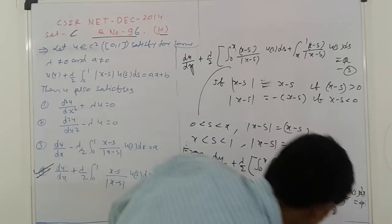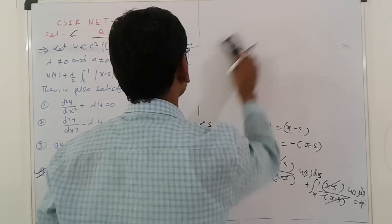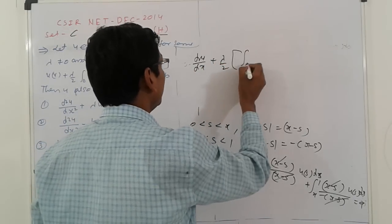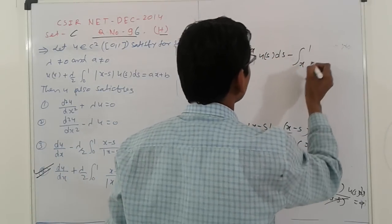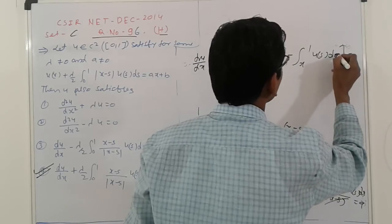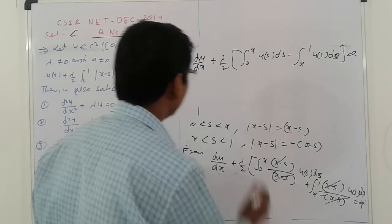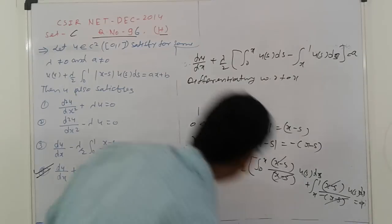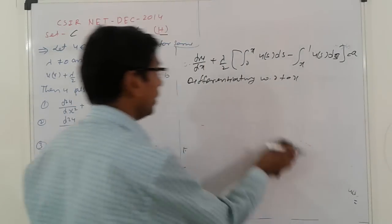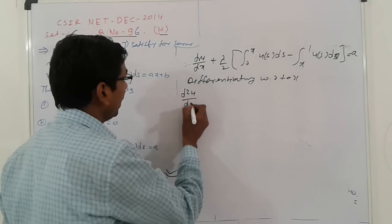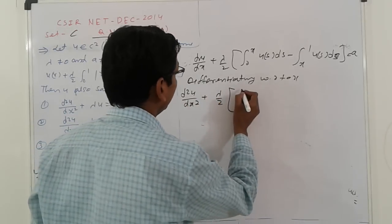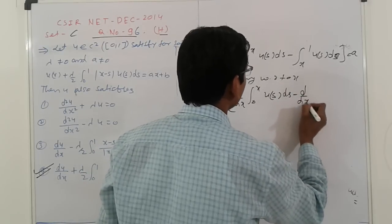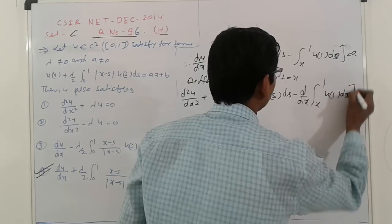Now differentiating again with respect to x and applying the Leibniz rule: d²u/dx² + λ/2 · [d/dx ∫₀ˣ u(s) ds − d/dx ∫ₓ¹ u(s) ds] = 0. Applying Leibniz rule with upper/lower limit derivatives: the terms from the limits contribute u(x)·1 and −(−u(x)·1), giving 2u(x) overall, so the factor of 2 cancels.